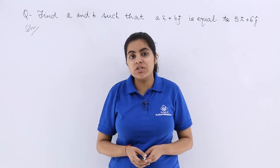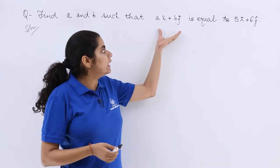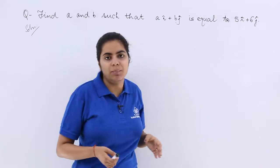A very simple and interesting question. Let's see what it is. It says find A and B such that A i cap plus B j cap is equal to 5 i cap plus 6 j cap.